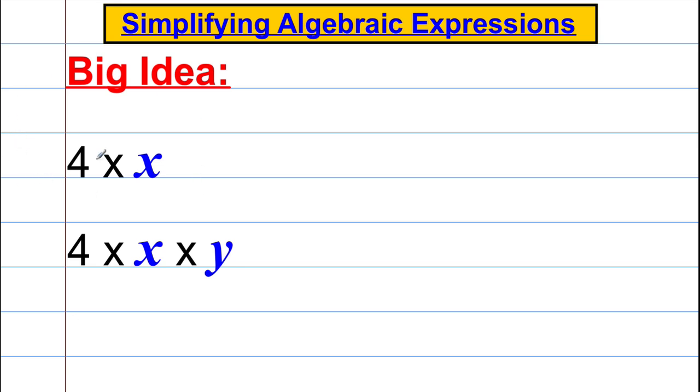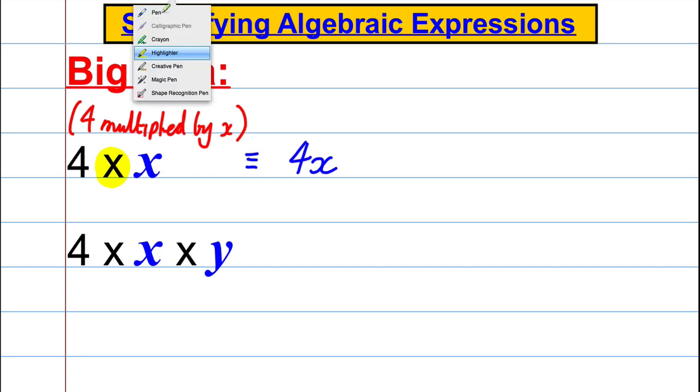You'll remember from previous videos and discussions that 4 multiplied by x, this statement here means 4 multiplied by x, we can write that in the following way. We would say that is written by a mathematician as 4x. Now the reason we do that is the multiply sign here can be confusing. One could confuse it with a variable like an x, so we drop it and we just write 4x.